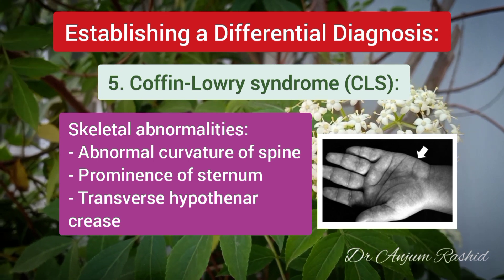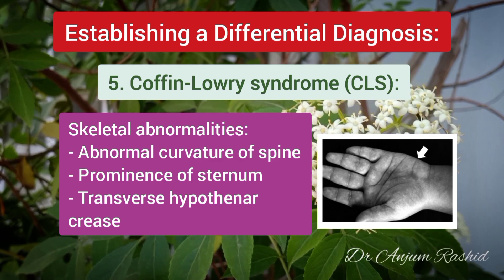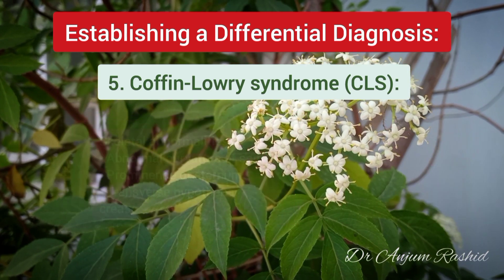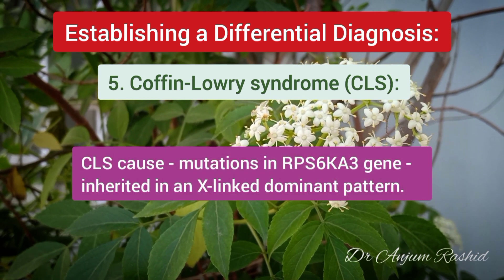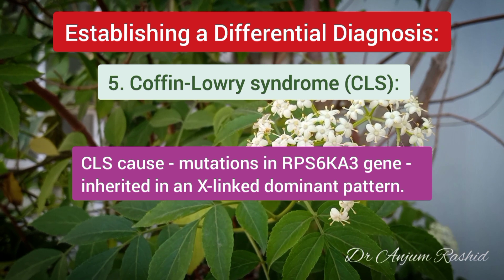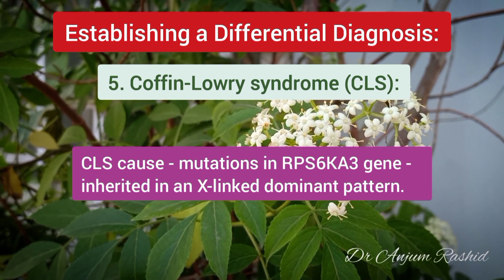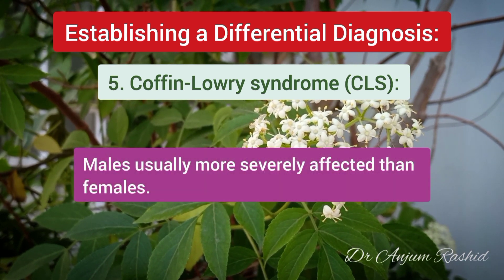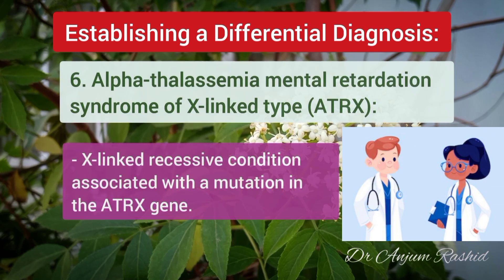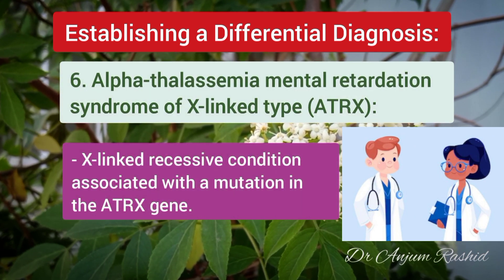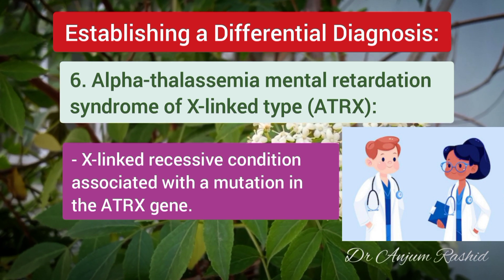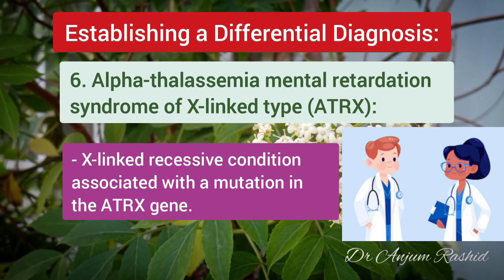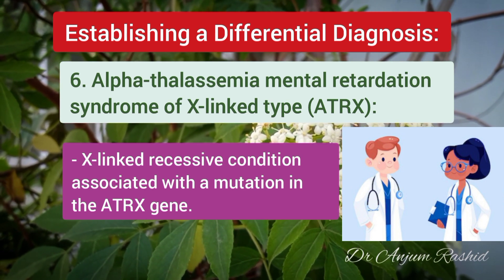Many geneticists point to the frequent observation of an accessory transverse hypothenar crease in patients with Coffin-Lowry syndrome. The condition is caused by changes or mutations in the RPS6KA3 gene and is inherited in an X-linked dominant pattern. Males are usually more severely affected than females. Many early cases of alpha-thalassemia mental retardation syndrome of the X-linked type — ATRX syndrome — were confused with Coffin-Lowry syndrome, as the clinical features are very similar.